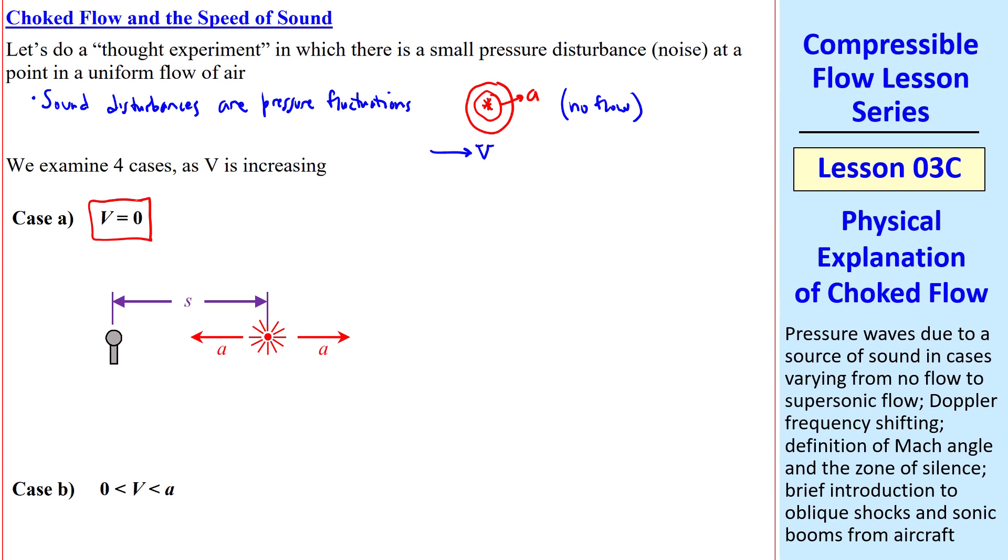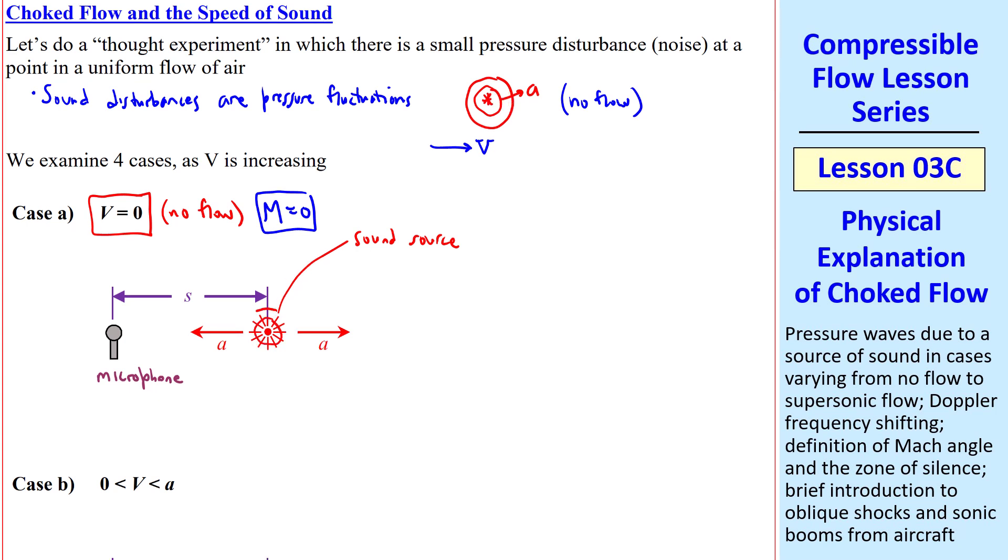Case A is when V equals zero. In other words, there's no flow. In terms of Mach number, M equals zero. In all these diagrams, this represents a microphone, and this represents our sound source. Since there's no wind, we have the case sketched here, where the sound waves spread evenly in all directions and move at the speed of sound. This is true in any direction. S is the distance from the sound source to the microphone, so the microphone hears or senses the sound after time delta t equal distance S over speed A. That's how long it takes for the sound wave to move from here to here. However, the frequency of the sound waves is unchanged. So this is kind of the trivial case.